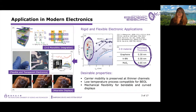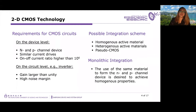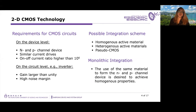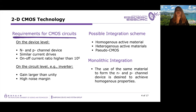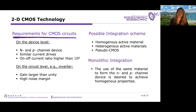When it comes to mechanical flexibility, 2D materials have also been explored for bendable, curved, or even stretchable displays. With this wide range of applications, we definitely need complementary metal oxide semiconductor, or CMOS circuits. To achieve such circuits at the device level, we need both N and P-channel devices with similar current drives and on-off current ratio higher than 10^6. At the circuit level, an inverter is the simplest CMOS circuit we can implement, and we need a gain larger than unity and a high noise margin.